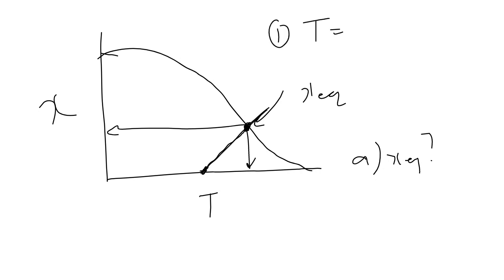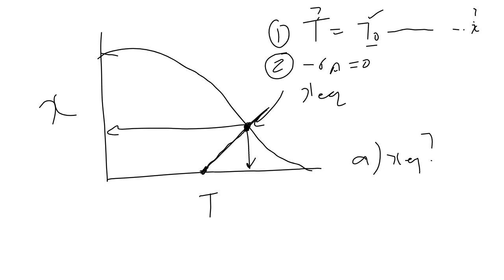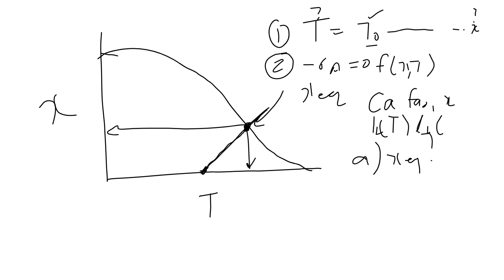The first equation is your adiabatic energy balance: T equals T-naught, where T-naught is specified and x is unknown. The second equation is where the rate goes to zero. You express the rate as a function of x and T by writing concentrations in terms of F_A0 and x, and writing K and K_c as functions of temperature.